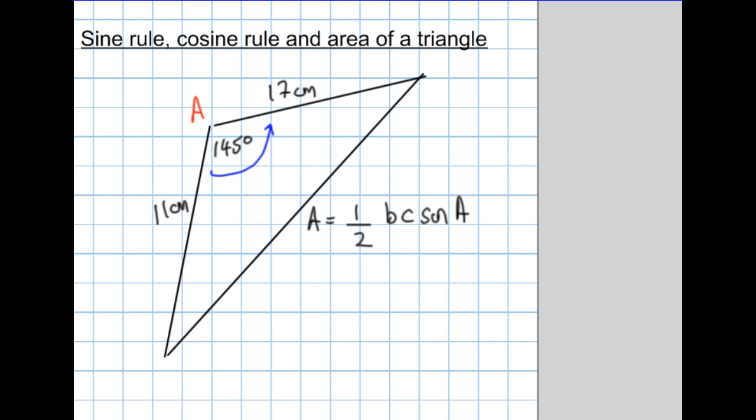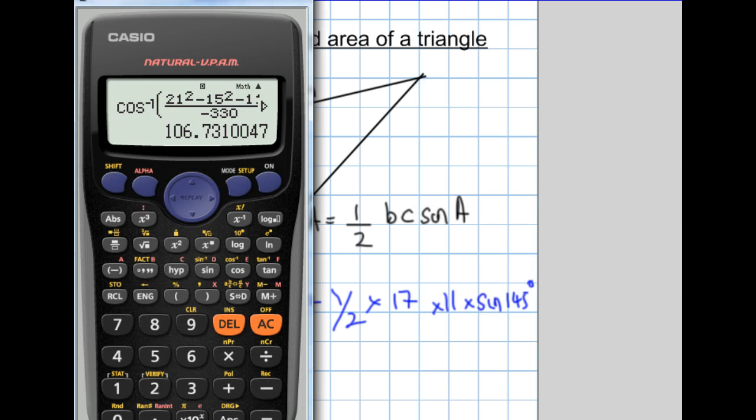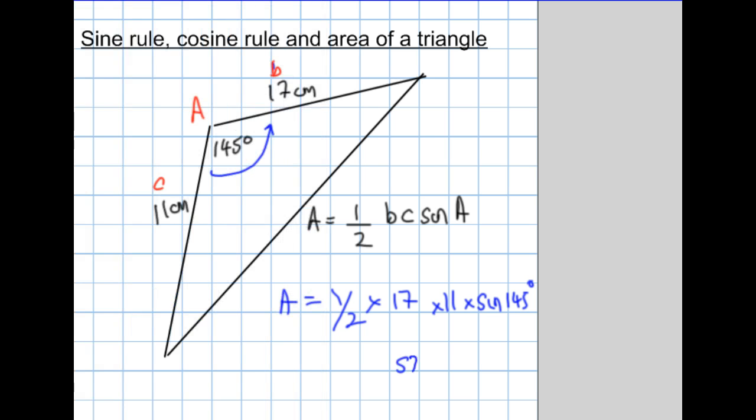Now A is the angle we know, and the B and C don't really matter. And all I do is area equals a half times B, which is 17, times 11, times the sine of 145 degrees. It's as simple as that. And the calculator does all the work for us. All we need to make sure we do is we write that down. So it's a half times 17 times 11 times sine 145. Close that bracket and there's the area. 53.6.